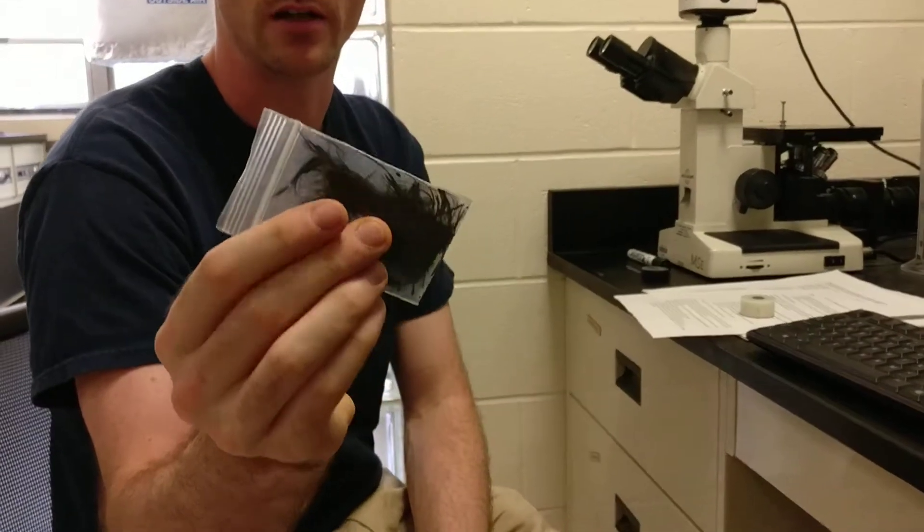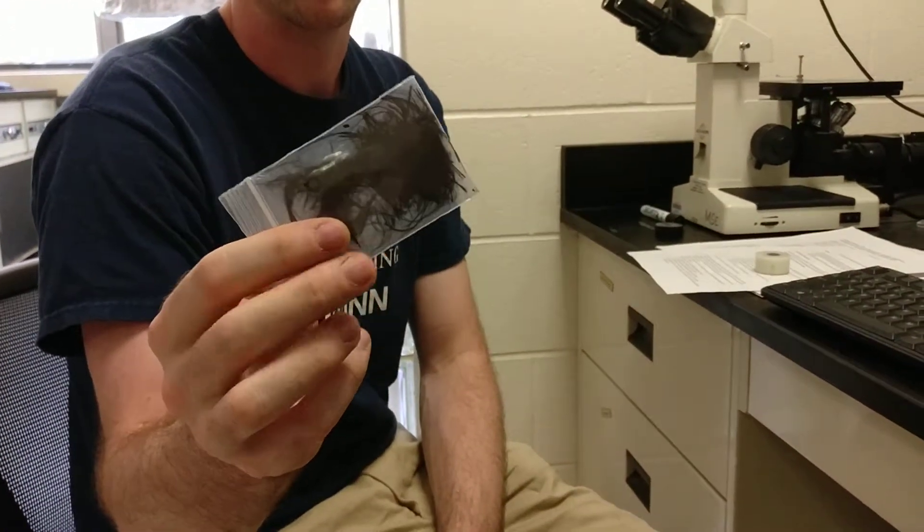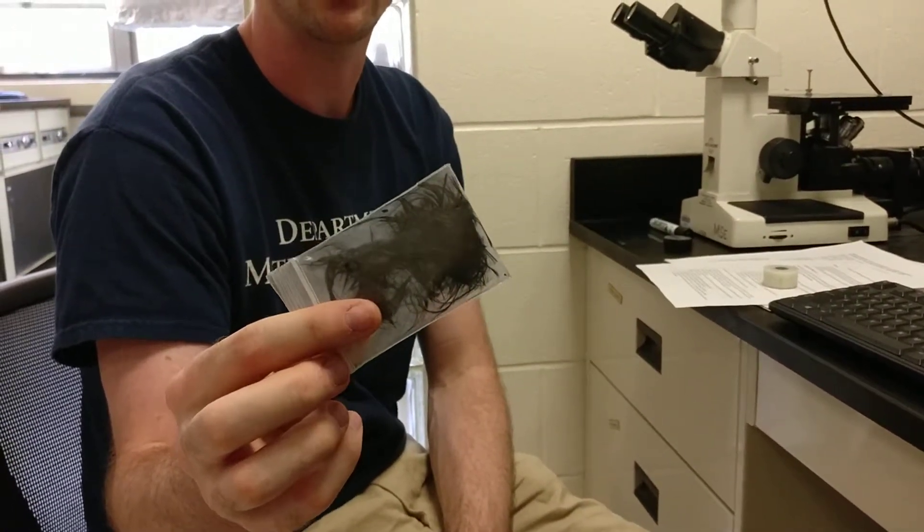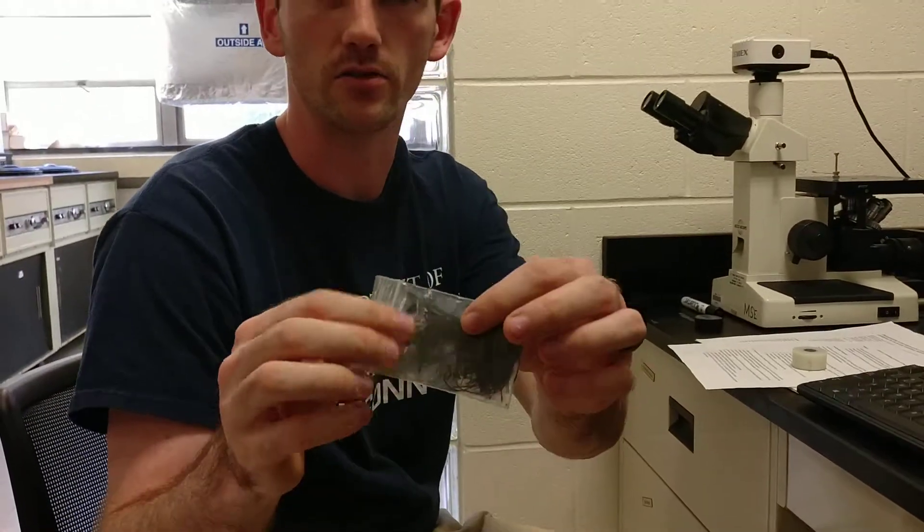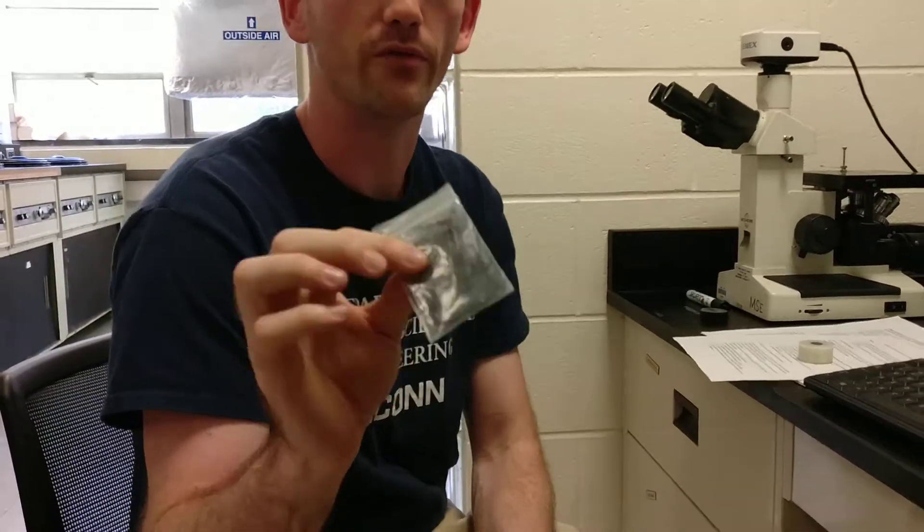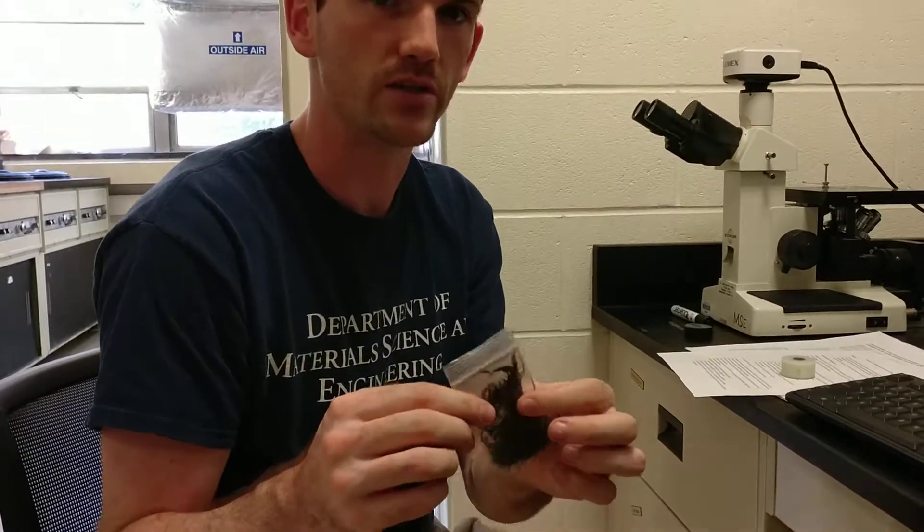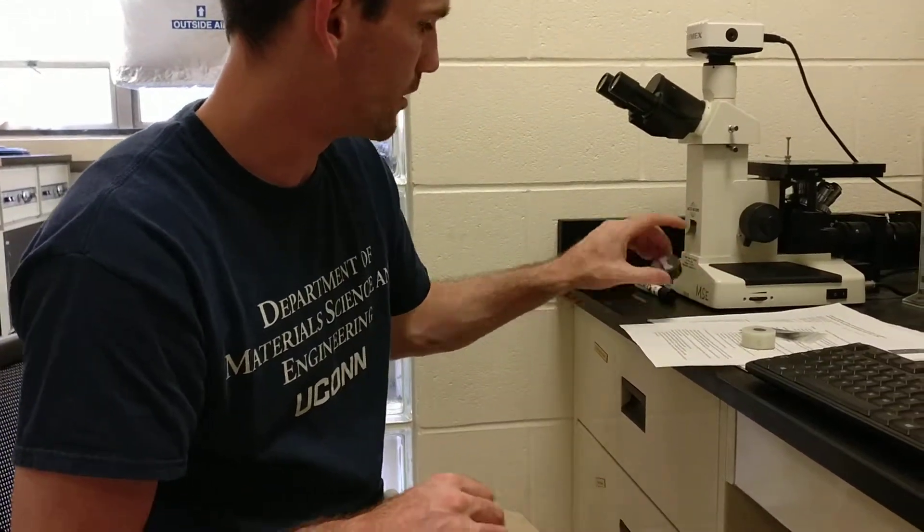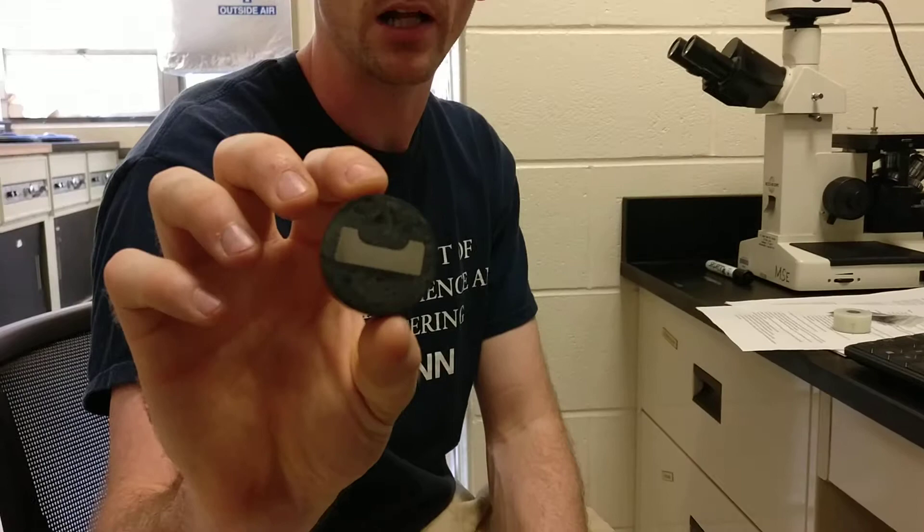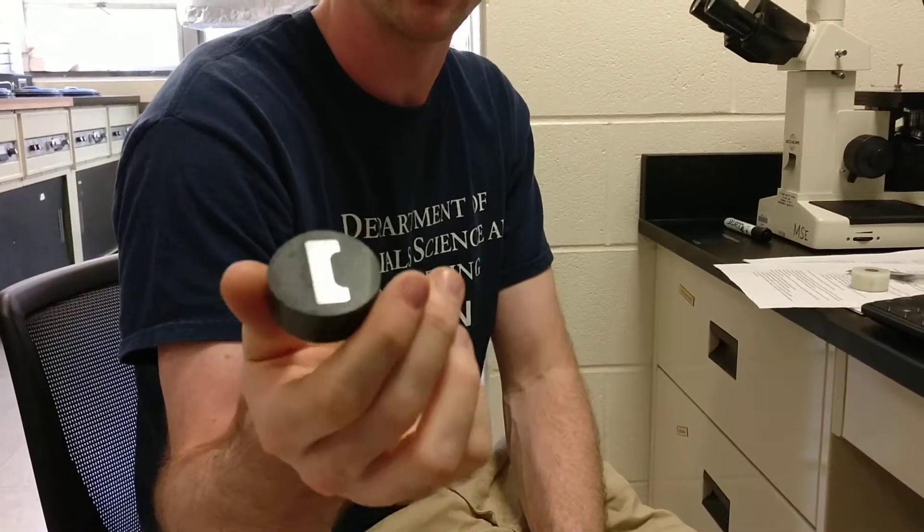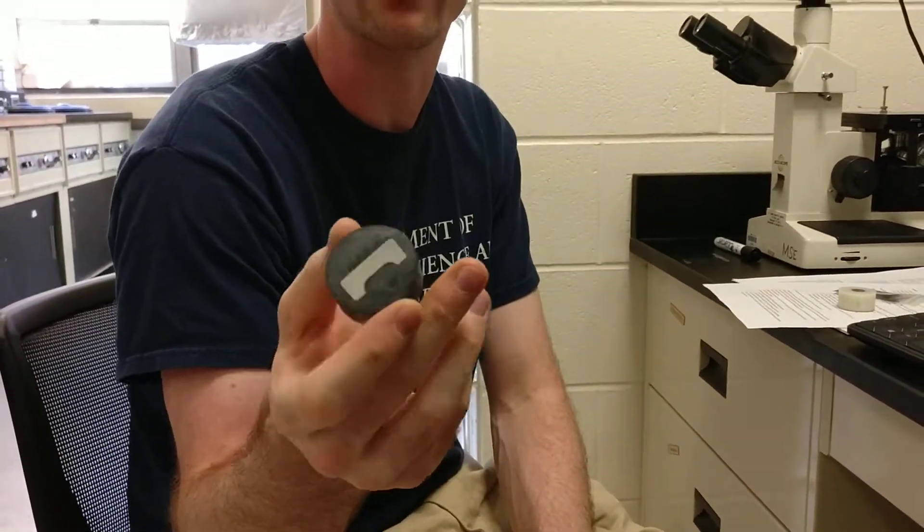These are actually from a composite. We boiled it in sulfuric acid to dissolve the resin out so we can weigh the carbon fibers and get a weight percentage. The third sample is a superalloy that has been etched so we can see the grains and different phases on the inside.